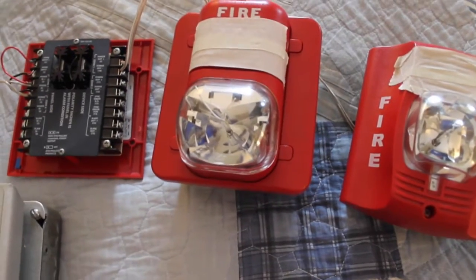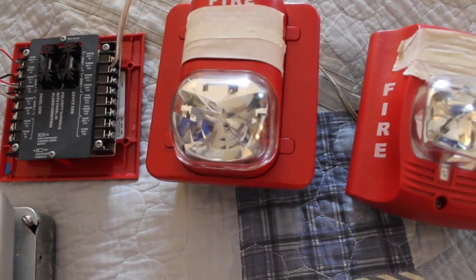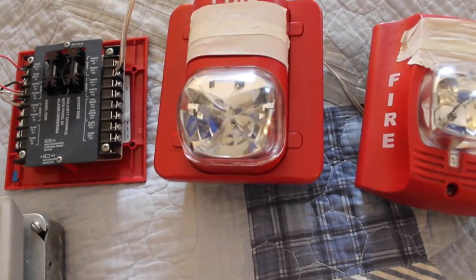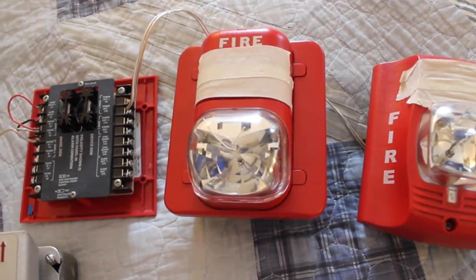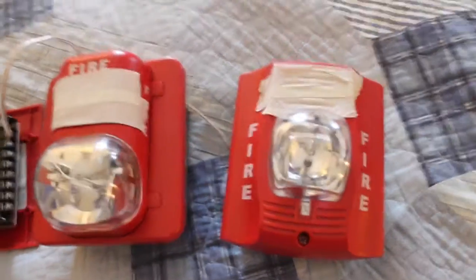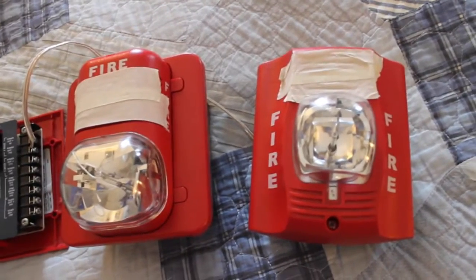Now, the first one we have is a System Sensor P1224MC. You saw this in Monaco Vulcan 1 System Test 1. And we have a P2R from System Sensor, which you saw in System Test 8.